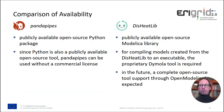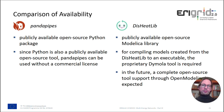The two tools also differ in terms of availability. PandaPipes is a publicly available open-source Python package, and since Python is also open-source, PandaPipes can be used without a commercial license. The DC Clip is also a publicly available open-source Modelica library; however, for compiling models created from the DC Clip to an executable, the proprietary Dymola simulation tool is required.